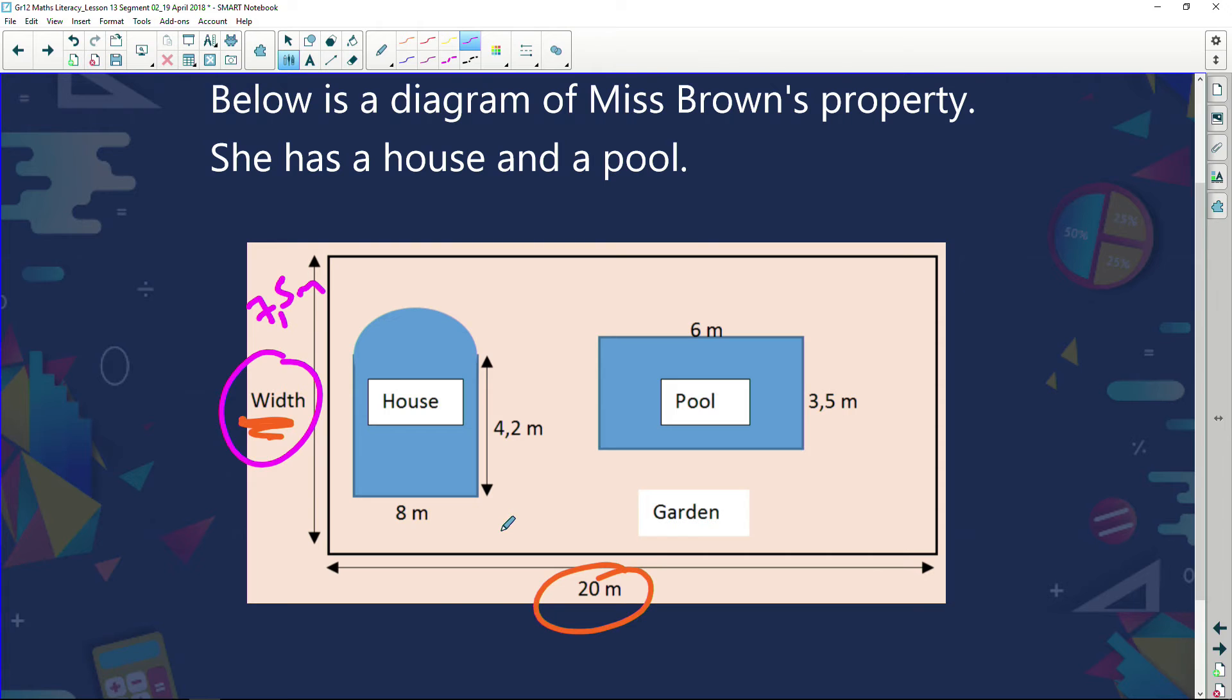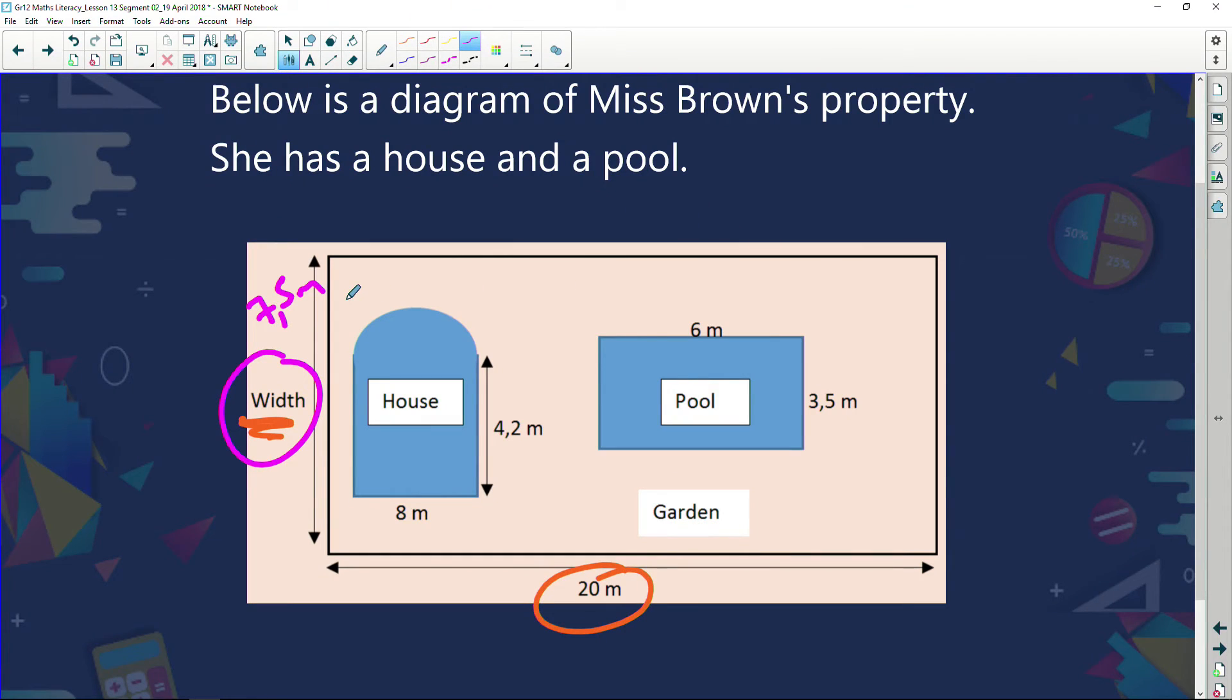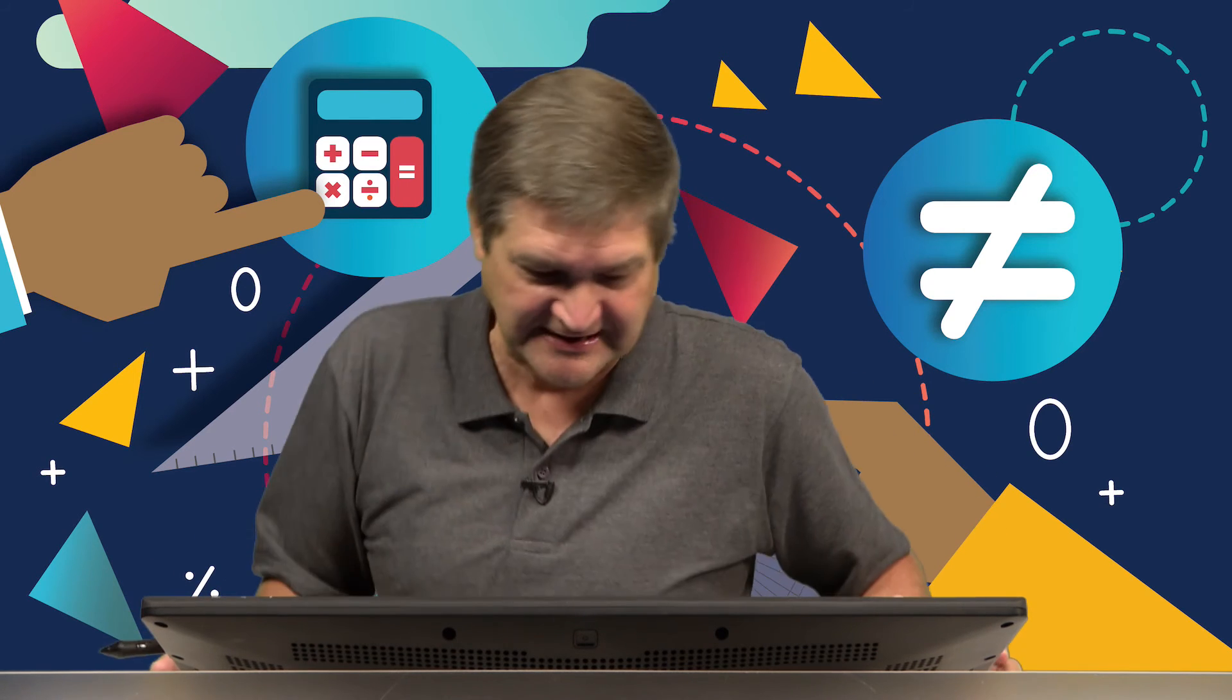Now, before we can even worry about the money, we need to say to ourselves, how much area needs to be covered with grass? And again, very simple process. I'm going to find the area of her whole yard. Then I'm going to find the area of the house. And it's a weird looking house, isn't it? It's got like a domed bit in the front. And then I've got to find the area of the pool. When I found the area of the house and the area of the pool, I can subtract those areas from my whole yard to see how much grass or how much area needs to be grassed. So let's do that. And I'm going to do it on this page, mainly because I've got all our dimensions right here.